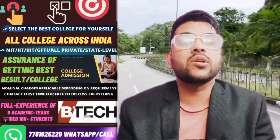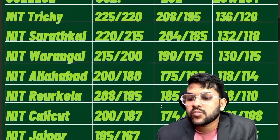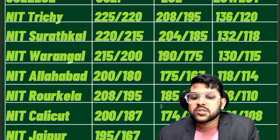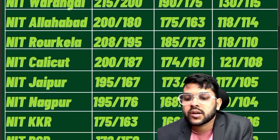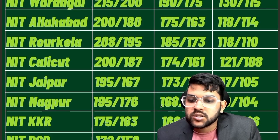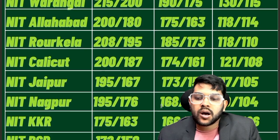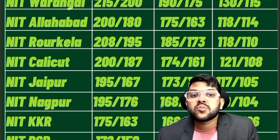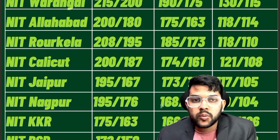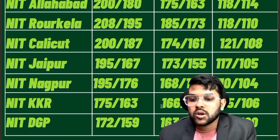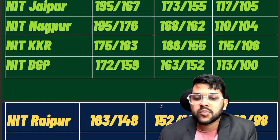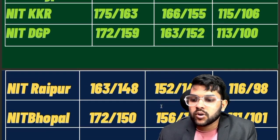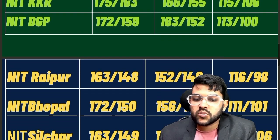For NIT Jaipur: 195, 173, 117 marks. For NIT Nagpur: 195, 168, 110 marks. For Kurukshetra: 175, 166, 115 marks — and after the slash it is for female, please confirm it is for female after slash. For Durgapur: 172, 163, 113 marks.